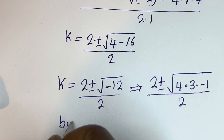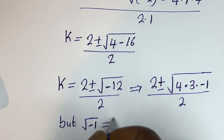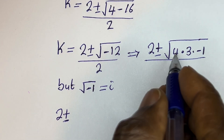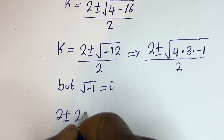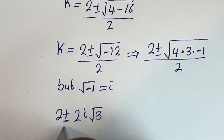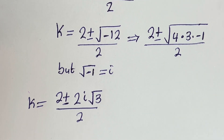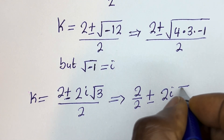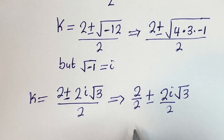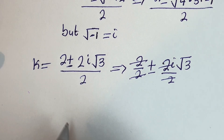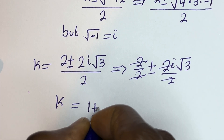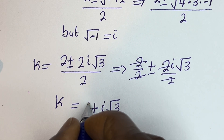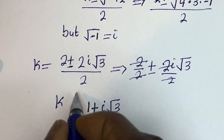Since square root of minus 1 equals i, this becomes 2 plus or minus 2i square root of 3, divided by 2. Simplifying, k equals 1 plus or minus i square root of 3. These are the two complex values of k from Case 1.